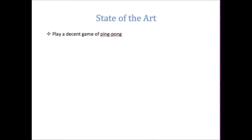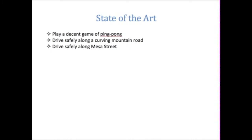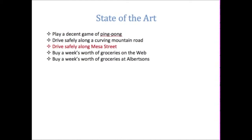So what can computers do? Can a computer play a decent game of ping pong? Yes. Can it drive safely along a curving mountain road? Yes — the sensors can see where the edges are. Can a car drive safely along a busy street like Mesa Street? Not so much — that's the goal of the Google Car, but with pedestrians and other cars, it's more problematic. Can we buy a week's worth of groceries on the web? Yes, that's a symbolic AI thing. What about buying groceries at a physical store like Albertsons? That's tougher because it involves a physical system, perception issues, and motor issues.